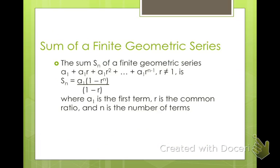Here's the formula you need to know for the sum of a finite geometric series: S sub n equals A sub 1, which is your first term, times 1 minus r — your ratio raised to the power of n — over 1 minus r. Make sure you write down that formula, you will need it. Also, r cannot equal 1, because that would make our denominator 0. So r is either going to be less than 1 or greater than 1.